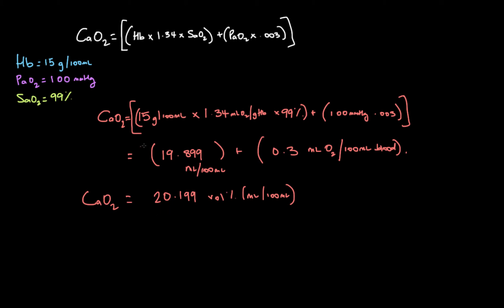What's pretty interesting here is that when you plug in normal values, you can really see how dependent we are on hemoglobin's carrying capacity. Of the 20.199 total oxygen content, 19.89 comes from oxygen bound to hemoglobin, and only a very small portion comes from what's dissolved in the plasma. For example, if someone is losing blood and losing hemoglobin, this carrying capacity — so important for oxygen content — starts to decrease.